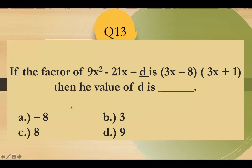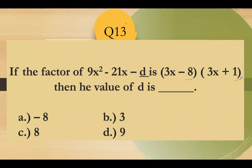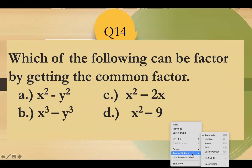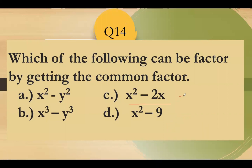Question number 13: if the factors of 9x squared minus 21x minus d are (3x minus 8) and (3x plus 1), then the value of d is — multiply the last terms: negative 8 times 1 is negative 8. Since we already have a minus sign, the value of d is positive 8. Letter C. Question number 14: which expression can be factored by getting the common factor? The answer has a common factor of x, giving x(x minus 2). Letter C.